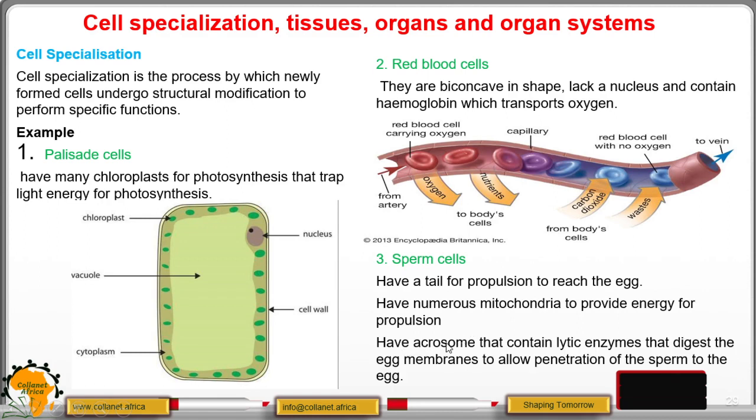At the head or the tip, there is an acrosome, which contains lytic enzyme. The lytic enzyme digests the membrane of the ovum to allow entry of the sperm.